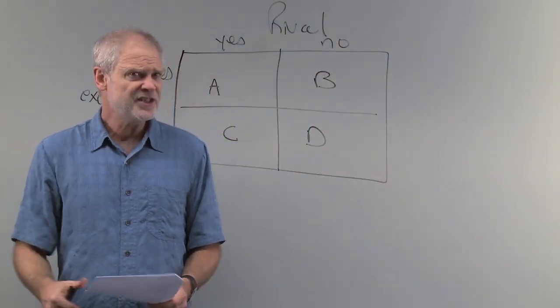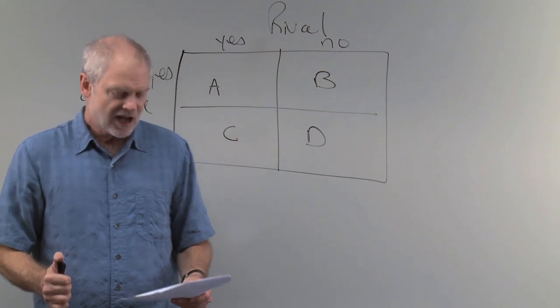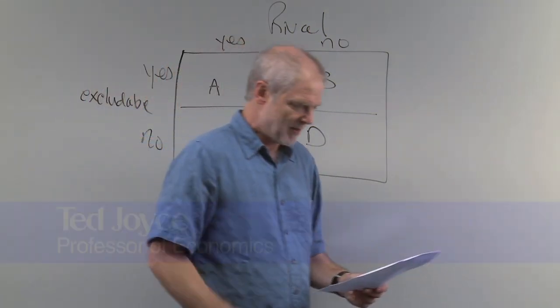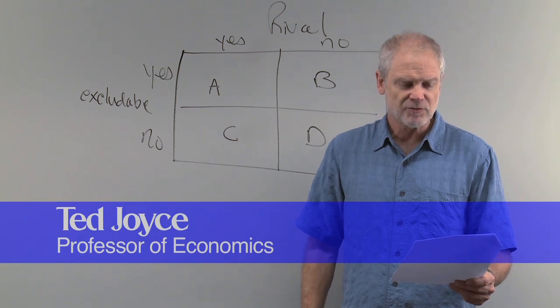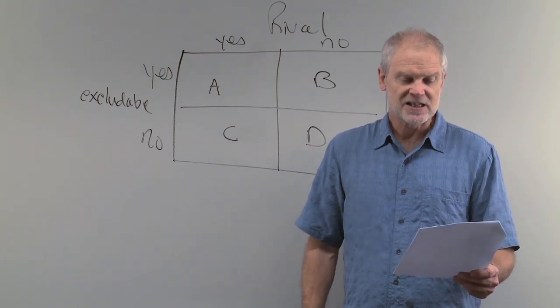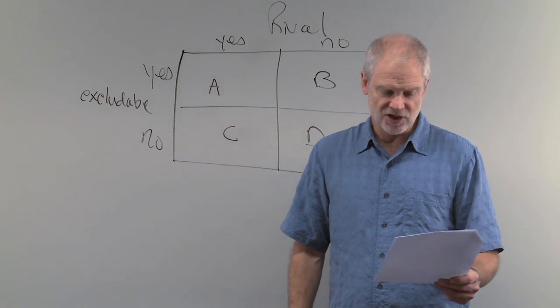Next one, number eight. A city street is... I'll go right to the answer and then let's back up here. It says C is the answer to number eight. A common resource is when it's congested, but it's a public good when it's not congested.